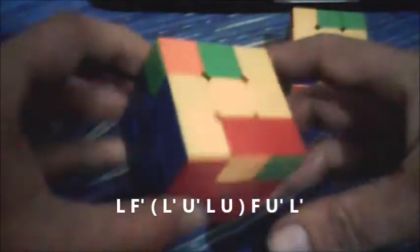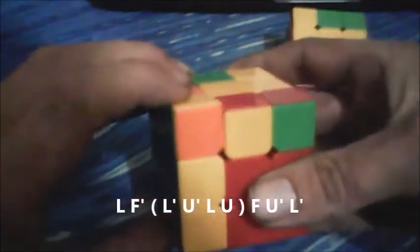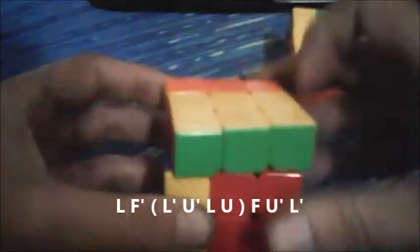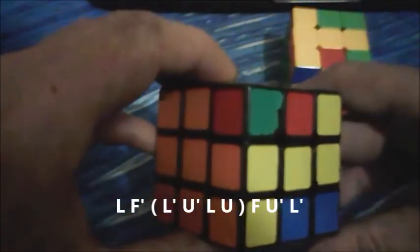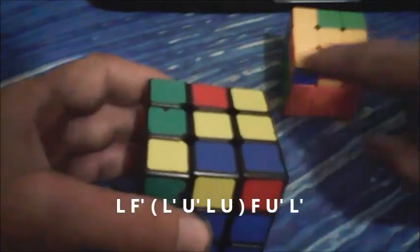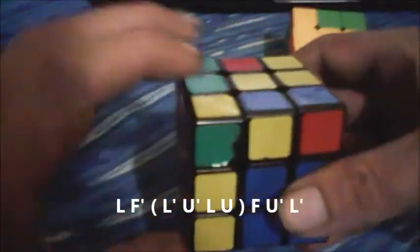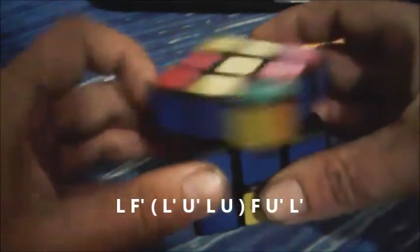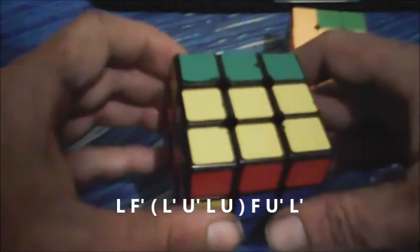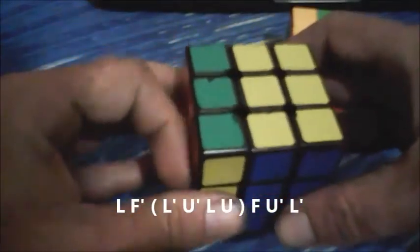So we'll go through that twice more. L, F prime, L prime, U prime, L, U, F, U prime, L prime. And last time, L, and then we do this case from this angle: F prime, L prime, U prime, L, U, F, then the two mirrors at the end that are changed, we go U prime, L prime.